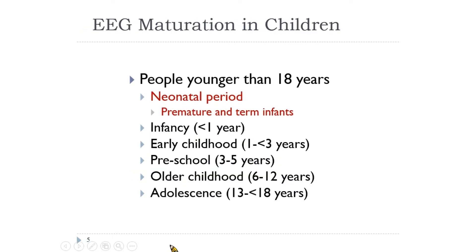Pediatric EEG covers the first 18 years of life, from the newborn period to infancy, early childhood, preschooler, school, and adolescence. EEG patterns change developmentally in a predictable manner as children grow up. Neonatal EEG has very different clinical considerations for recording and interpretation, so we usually separate it from other ages — the newborn period and the age beyond.